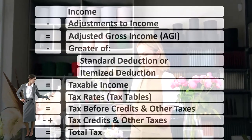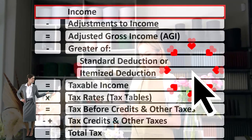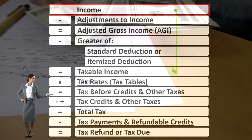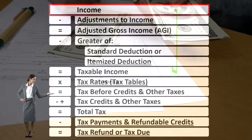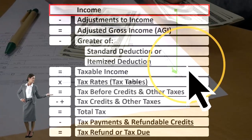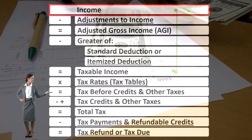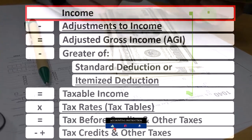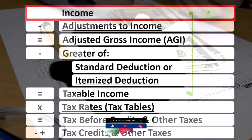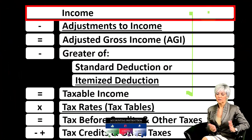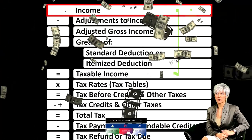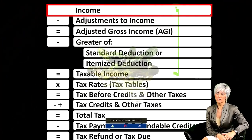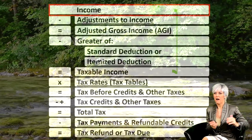Looking at the income tax formula, we're focused on line one — income. The first half of the income tax formula is, in essence, an income statement, although it's just the outline, the scaffolding, with other forms and schedules feeding into it. When we think about line one, we're focused primarily on the Schedule C, which is, in essence, an income statement for a business — income minus expenses, which we can think of as business deductions — getting to the net income that flows into the top line of our income tax formula.